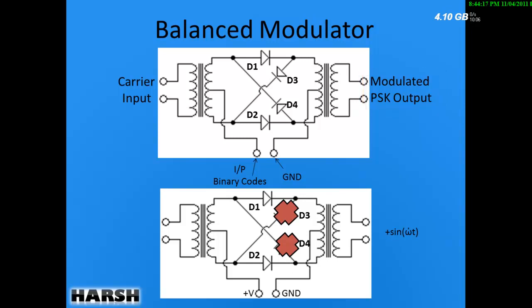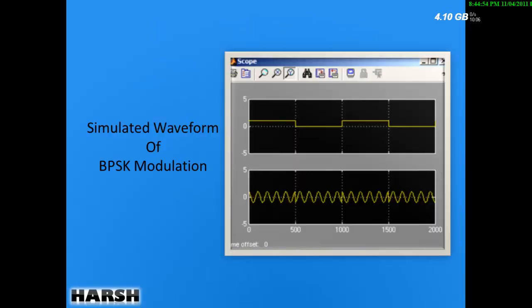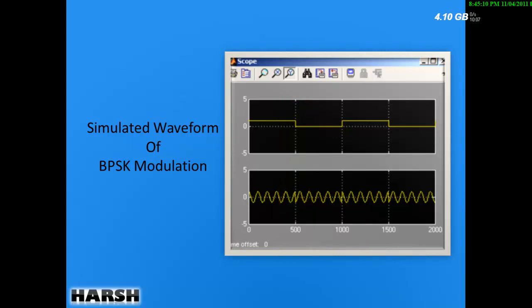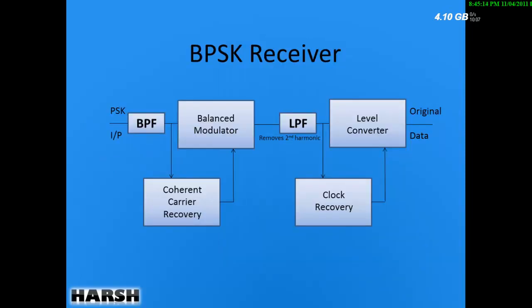The ring modulator works as follows: input binary codes are given from below and one terminal is grounded. When binary input is +V voltage, diodes D3 and D4 are reverse biased, so only D1 and D2 conduct, giving a +sin(ωt) waveform. In the opposite case, with -V input, D1 and D2 do not work and D3 and D4 conduct, giving -sin(ωt). Here is a MATLAB-simulated waveform of BPSK modulation — you can see the 180 degree phase shift while moving from one to zero. I simulated this on MATLAB.